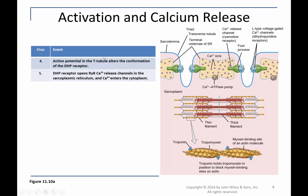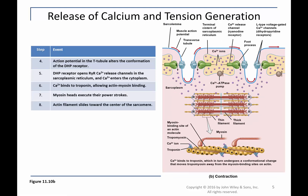That action potential moves along the sarcolemma. When it encounters the transverse tubule, it goes through the transverse tubule through the center of the muscle cell all the way through to the other side, causing the movement of dihydropyridine receptors, DHP. The DHP receptor movement then triggers the opening of the calcium release channel, RYR. The opening of the ryanodine receptor channel allows calcium to flow down its concentration gradient from the lumen of the sarcoplasmic reticulum into the cytoplasm, and then bind to troponin on the thin filaments.